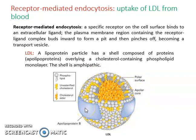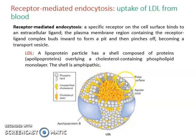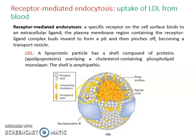This is a model of an LDL particle. The single band is the protein component called apolipoprotein B, and the gray portions are phospholipids forming a monolayer — unlike the typical plasma membrane where phospholipids form a bilayer. This monolayer also contains unesterified cholesterol, which is typically found in the plasma membrane, forming the polar surface.